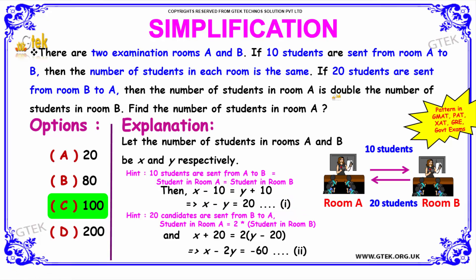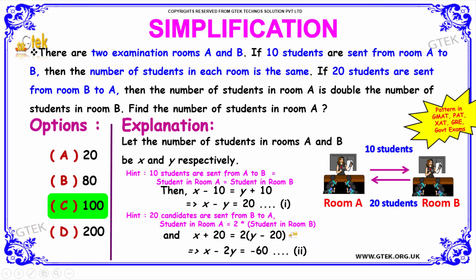From the second condition: if 20 students are sent from room B to A, then the number of students in room A is double the number of students in room B. The expression is: X plus 20 is equal to 2 into Y minus 20. That is, 20 candidates are sent from B to A. On solving, we get X minus 2Y is equal to minus 60, which is equation number 2.